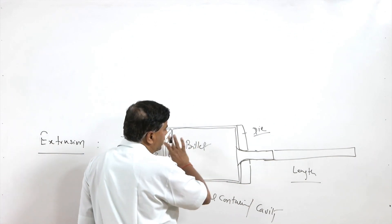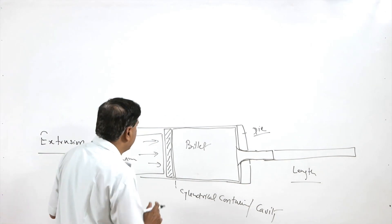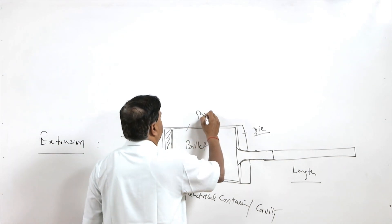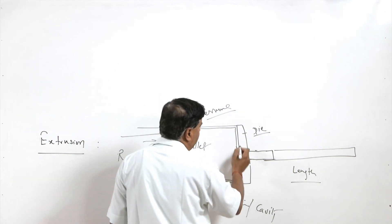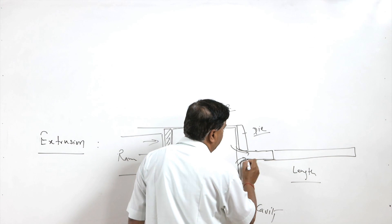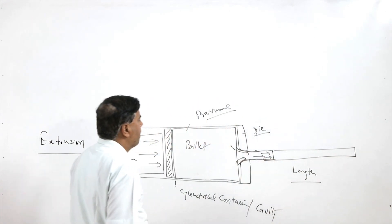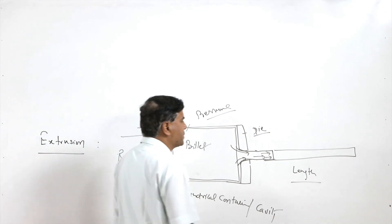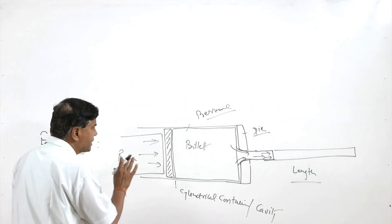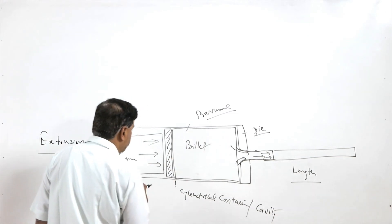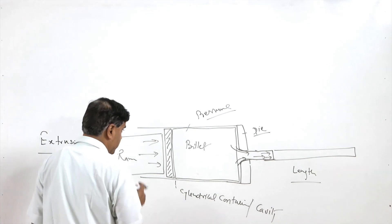As the billet is pushed with the help of the ram, it is pressurized and under pressure the metal starts flowing out of the die, taking the shape of the opening in the die to produce different shape cross sections. This is the basic and simplest approach used in the extrusion process.